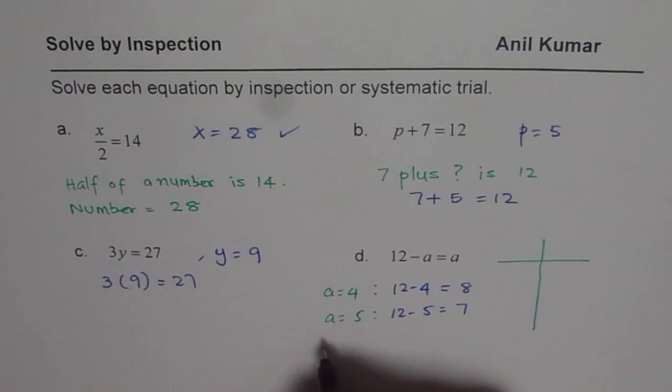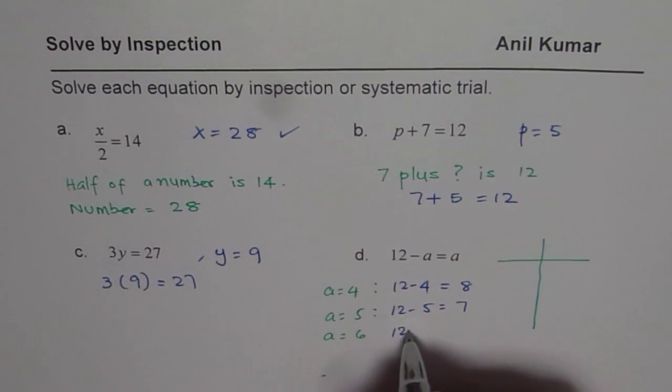Okay, let us try 6. So we say a equals 6, and then what do we get? We get 12 minus 6 is 6. So both are the same values.